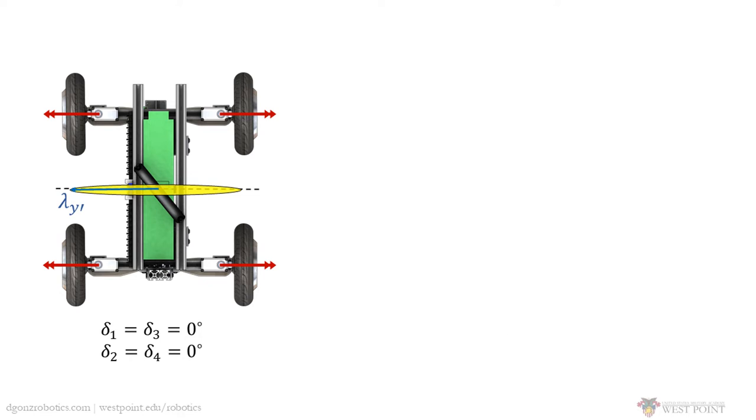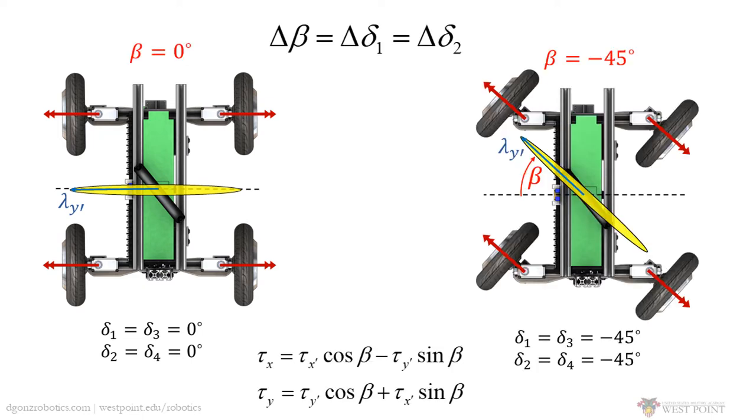Let's go back to the singular configuration and introduce a second submovement, called beta, where all wheels steer in the same direction. Doing this changes the direction of the y' axis, but doesn't change the ratio between the eigentorques.